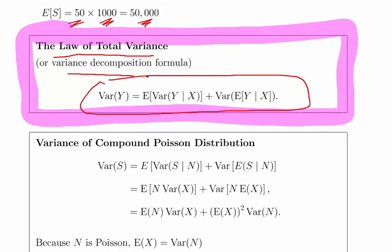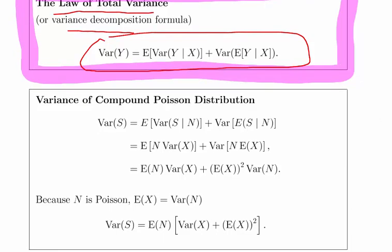You can bring it into your answer without having to justify it because it's usually considered as taken as known, unless the question is to derive the law of total variance. It's also known as the variance decomposition formula.